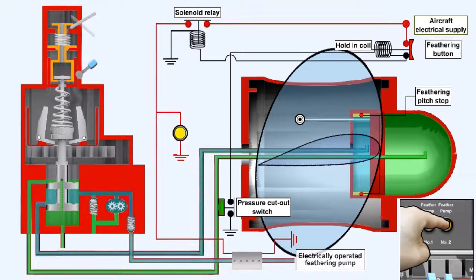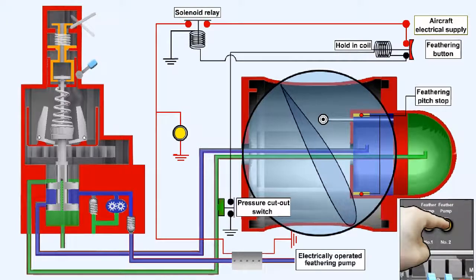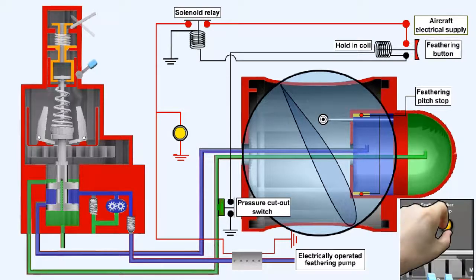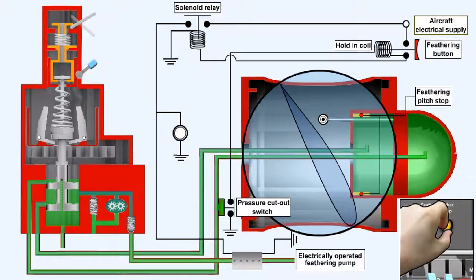The feathering button should now be pressed. This starts the feathering pump running, which will supply the pressure oil to the pitch change mechanism to move the blades away from the feathered position towards fine. Once the propeller starts windmilling, the feathering button should be pulled out. Pulling out the feathering button overcomes the holding coil. When the contacts of the feathering button are opened, they break the supply to the solenoid relay, the contacts of which are supplying the feathering pump. Thus the feathering pump stops. The rest of the restart drill is accomplished in accordance with the aircraft operating manual.